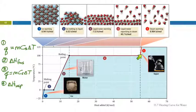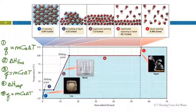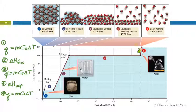Once all the water has gone into the gas state, we use Q equals MC delta T again. We can calculate how much energy is needed to change the temperature from 100 degrees to 125 degrees. If we want to know the total energy used from minus 25 all the way up to 125, we have to calculate the energy change for each line segment and add them together.